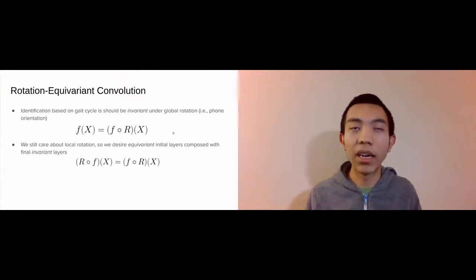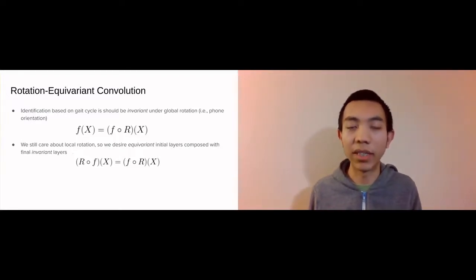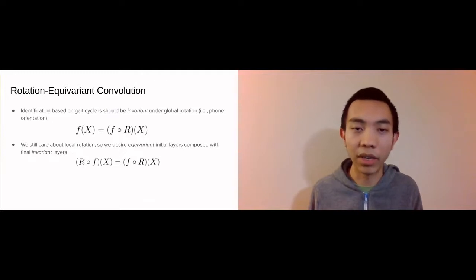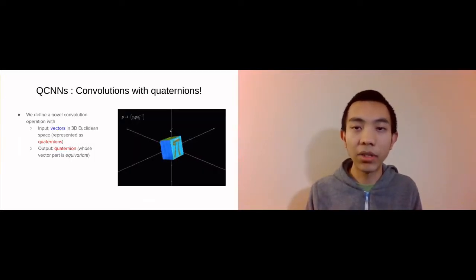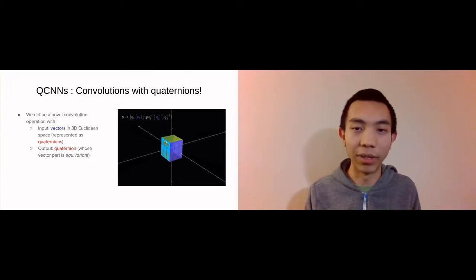We present a convolutional neural network architecture whose output is invariant with respect to an arbitrary rotation of the input gait tensors. This network is constructed by stacking a number of rotation equivariant quaternion convolutional layers. These quaternion layers leverage the representation of 3D spatial rotations as quaternion conjugation, as shown in this 3Blue1Brown animation.